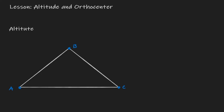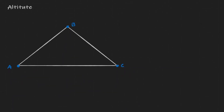Welcome. In this video we are going to be discussing the idea of an altitude and the orthocenter. So let's get started by thinking about the definition of an altitude of a triangle. We can define the altitude as the height of a triangle. Visually speaking, an altitude is a vertical line that runs from one point to the opposite side, and this line is a perpendicular line.